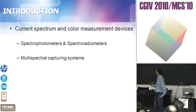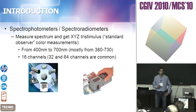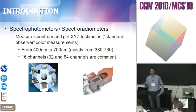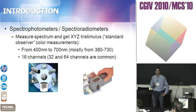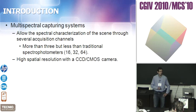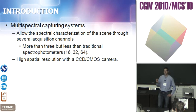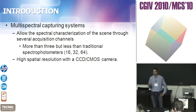The current spectrum and color measurement devices are spectrophotometers and also multispectral capture systems. Spectrophotometers measure spectrum and get XYZ tristimulus values, normally from 400 nanometers up to 700, and in most cases also from 380 to 730. They can do it in 16 channels at least and you can also get 64 channels. Multispectral capture systems also allow spectral characterization of scenes, not only points, through several acquisition channels — more than three but normally fewer than traditional spectrophotometers, so not up to 16 or 32 channels.